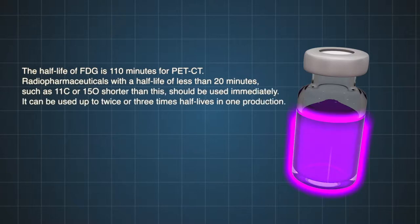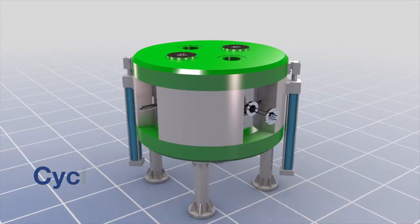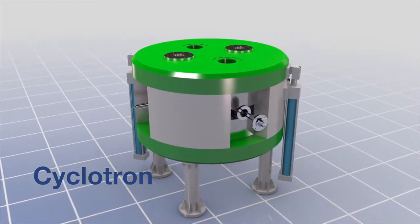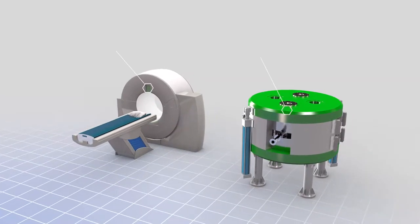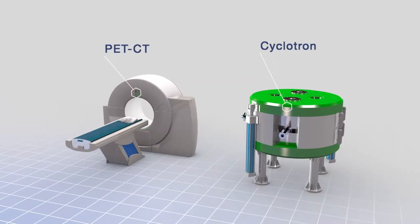The glucose used here, FDG, must be produced and used immediately due to its short half-life. And what you need here is cyclotron. A PET-CT operating hospital always has a cyclotron.